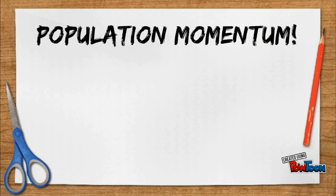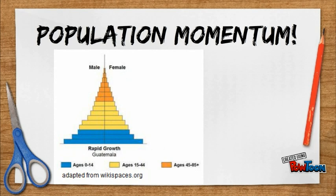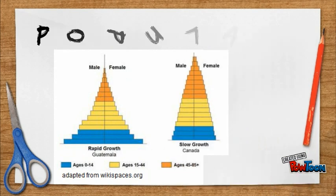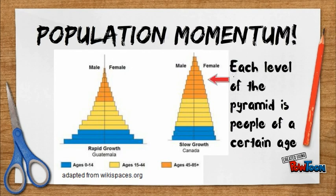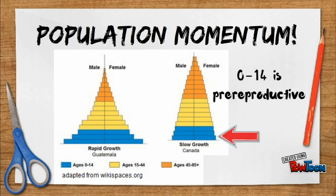Let's take a look at population momentum. Population momentum will cause a population with a young age structure to grow faster than a population with an older age structure. To understand why, let's use two imaginary populations as an extreme example.